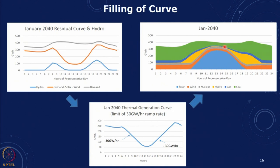These are the different filled-up load curves. Based on this we get the requirement from the rest of the system — from thermal generation. We can see from the slope of this the ramp rate, which was of the order of 30 gigawatts per hour, and we can see what it means on a plant-by-plant basis.